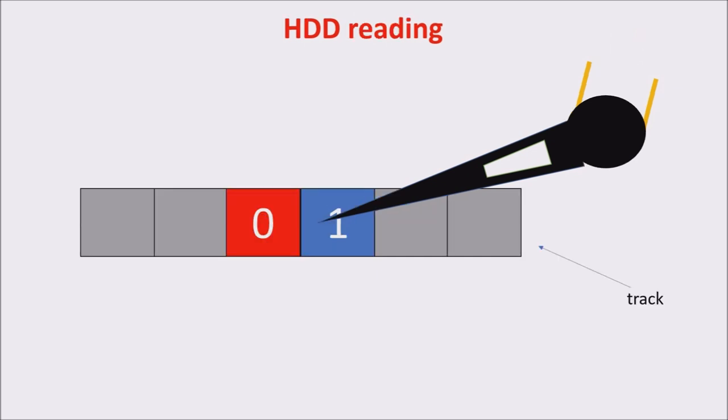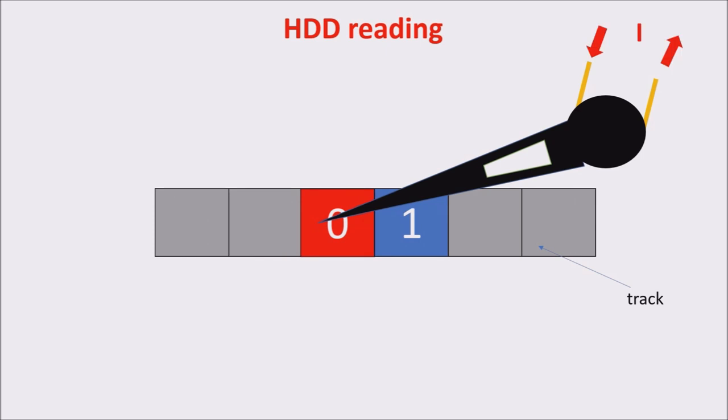For reading, we always move the reading head on the cell to be read. The moving head passing over the magnetized material induces a little current with a direction according to the orientation of the magnetized grains in the cell. So we understand if there is a 1 or a 0 by checking the induced electric current direction.